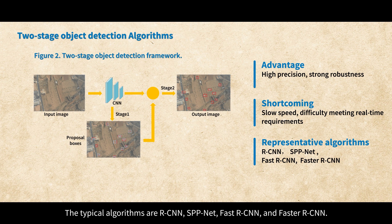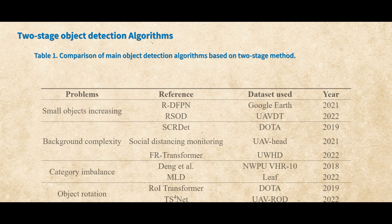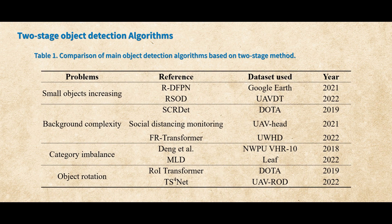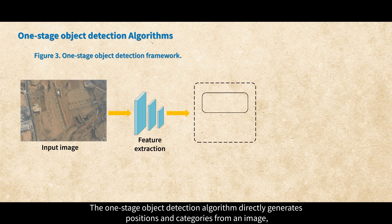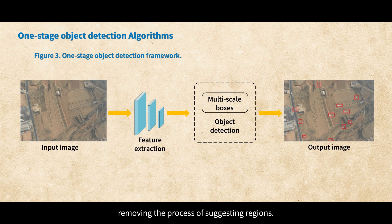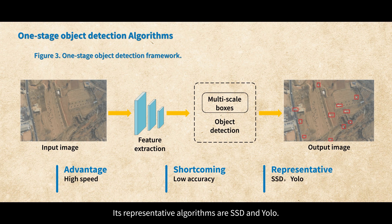The typical two-stage algorithms are RCNN, SPPNet, Fast RCNN, and Faster RCNN. The one-stage object detection algorithm directly generates positions and categories from an image, removing the process of suggesting regions. Its advantage is high speed, but the disadvantage is low accuracy. Its representative algorithms are SSD and YOLO.